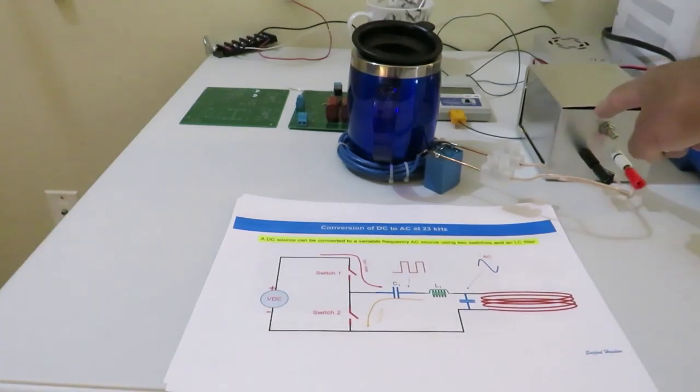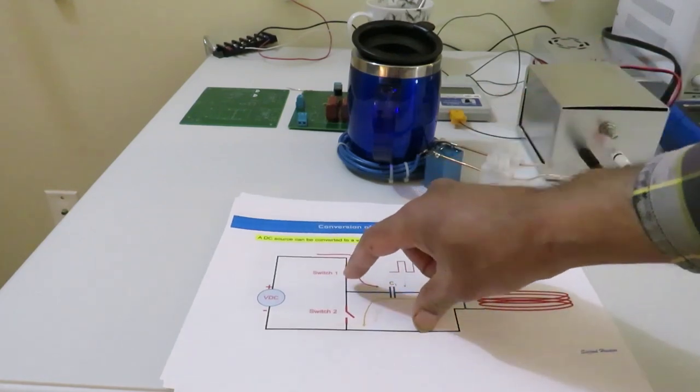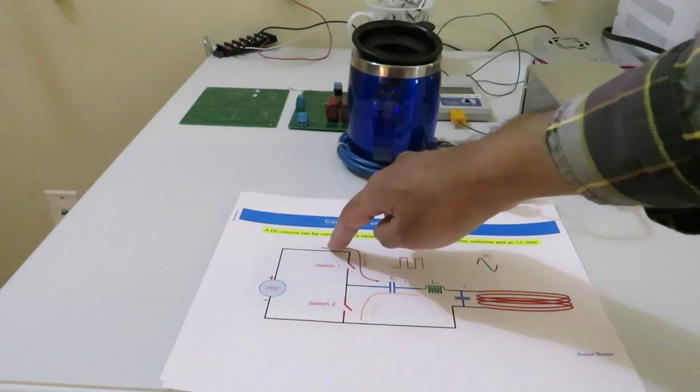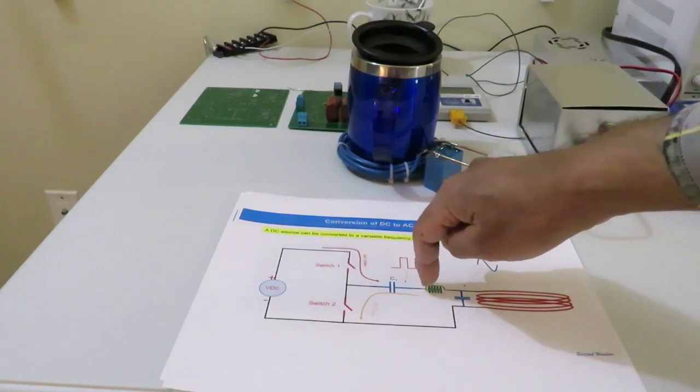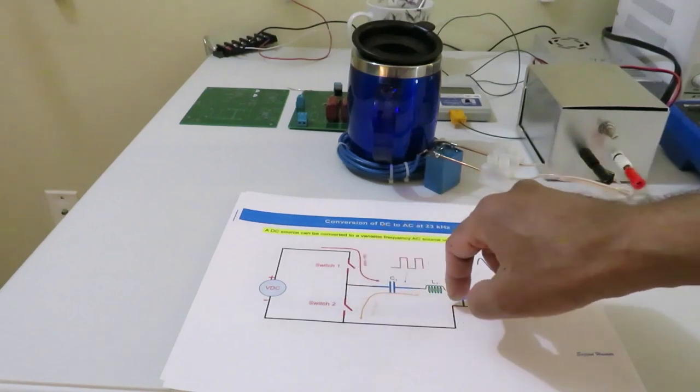Inside the box, an electronics is there. And how this electronic circuit works? I will try to explain. There are two electronic switches. When the top switch is on, current flows through the coil.